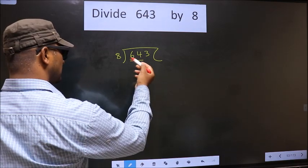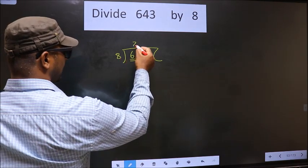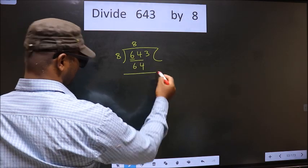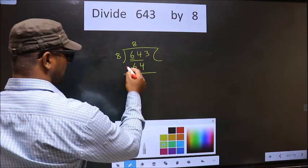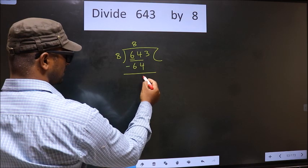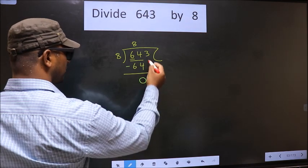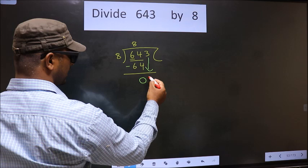When do we get 64 in 8 table? 8 eights is 64. Now, you subtract. 64 minus 64, 0. Now, we bring down the beside number, that is 3 down.